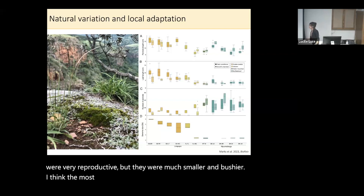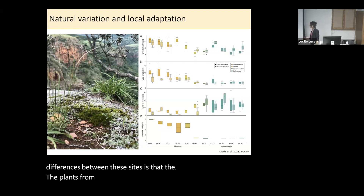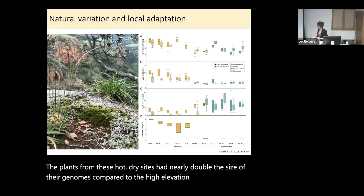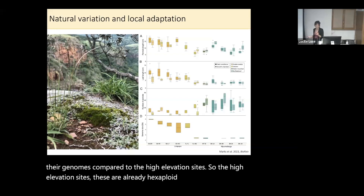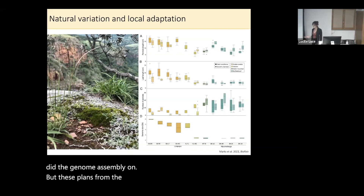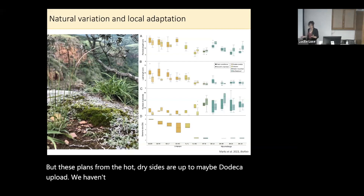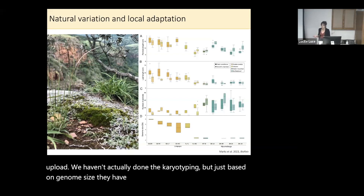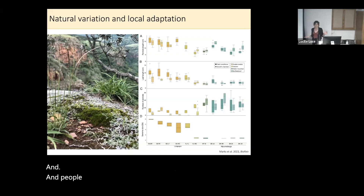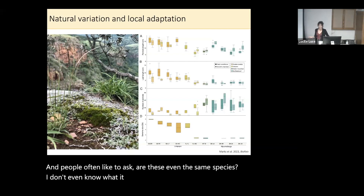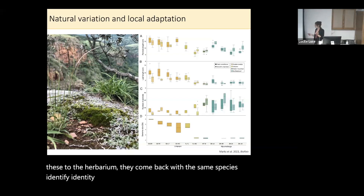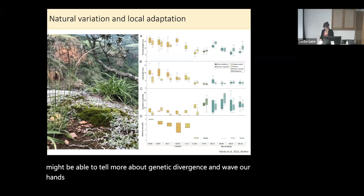The most interesting finding is that plants from the hot-dry sites had nearly double the size of their genomes compared to the high-elevation sites. The high-elevation sites are already hexaploid — this was the one we did the genome assembly on. But plants from the hot-dry sites are up to maybe dodecaploid based on genome size. People often ask, are these even the same species? I don't even know what a species is anymore. But if we submit these to the herbarium, they come back with the same species identity.